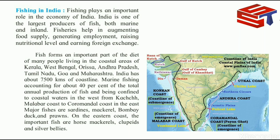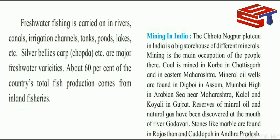Major fish caught in this western region are sardines, mackerel, Bombay duck, and prawns. On the eastern coast — the Coromandel coast, Andhra coast, and Utkal coast — the important fish are horse mackerel, clupids, and silver bellies.